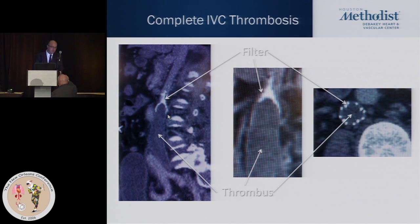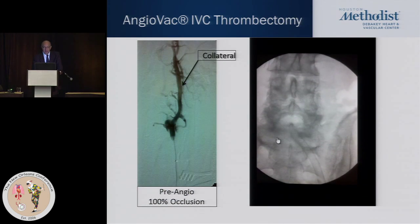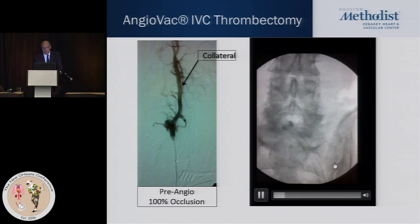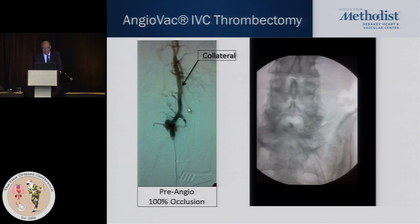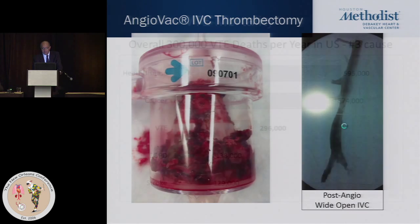This is the IVC filter that's in place. Here you see the IVC filter in place, and below it the inferior vena cava is completely clotted off. An AngioVac was used — you see the device being placed from the left common femoral vein. This is what the angiogram looked like before the AngioVac evacuation, this is what was obtained from the inferior vena cava, and this was the completion angiogram showing a wide-open inferior vena cava.